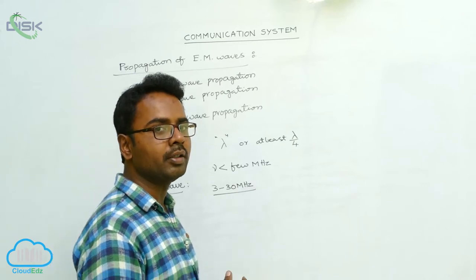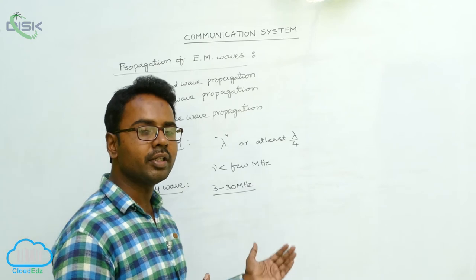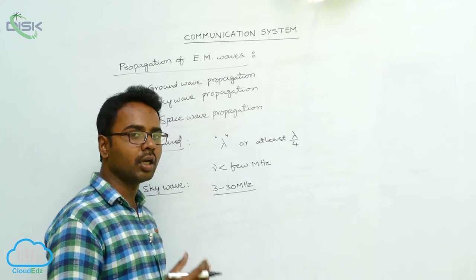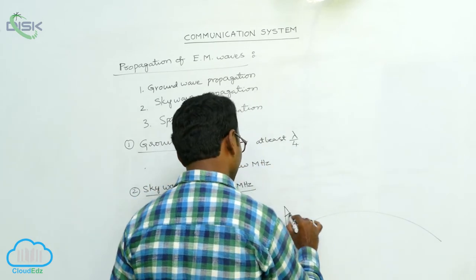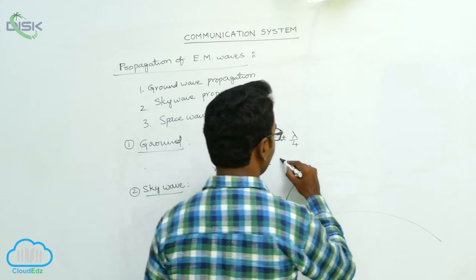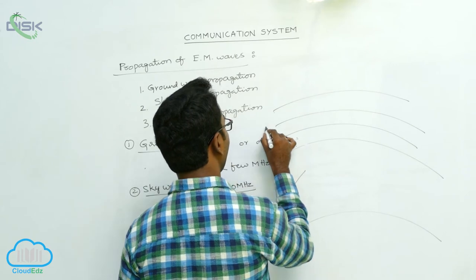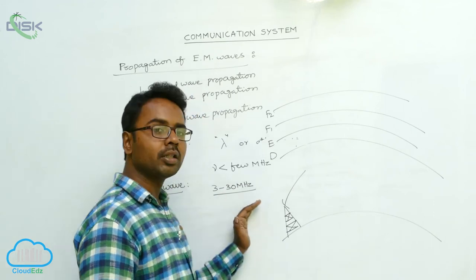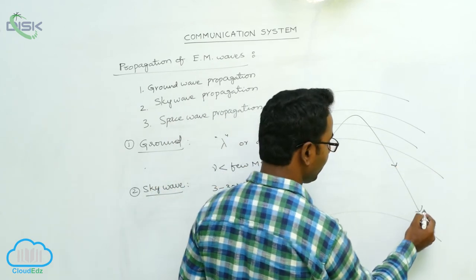The ionosphere reflects signals with frequencies between 3 to 30 megahertz back to the ground, achieving sky wave propagation. Suppose this is the ground and this is the transmitting antenna, sending signals to the atmosphere. These are the D, A, F1, and F2 layers of the ionosphere. A signal having a frequency from 3 to 30 megahertz is reflected back by the ionosphere and received by the receiving antenna.